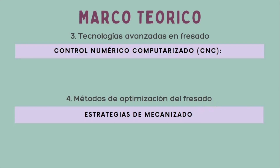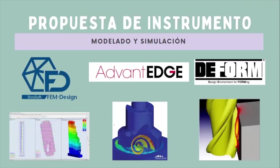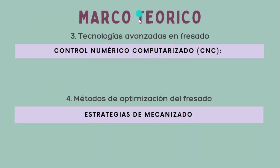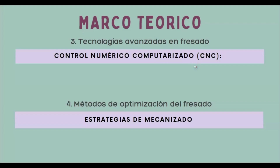Tenemos los parámetros de corte que ambos métodos requieren. Y por último, están las tecnologías avanzadas, que son la refrigeración criogénica, que se utiliza en ambos métodos para mejorar la vida útil de las herramientas y reducir la generación de calor. La segunda es monitoreo y control en tiempo real, que son sistemas de monitoreo que utilizan sensores y algoritmos avanzados para ajustar automáticamente los parámetros de corte y evitar fallos durante el proceso de fresado.